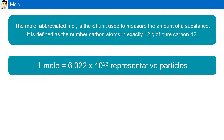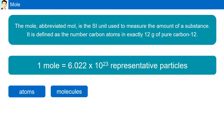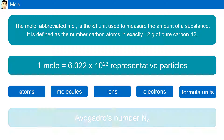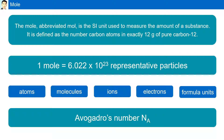Representative particles can be atoms, molecules, ions, electrons, or formula units. The number 6.022 times 10 to the 23rd is also referred to as Avogadro's number. It is named after the famous Italian physicist, Amedeo Avogadro.